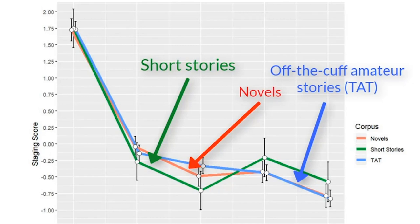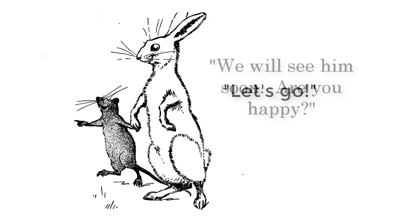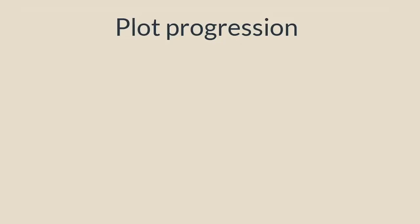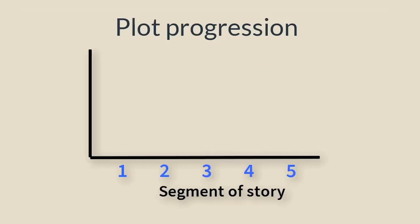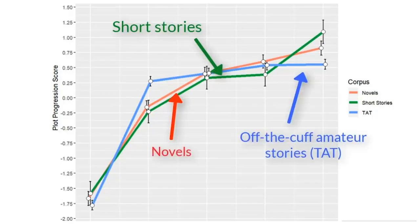Narrative structure, then, is not tied to content, length, or formality, but it is something deeper, more universal. Once the stage is set, the story can begin — words that reflect movement and change over time should increase. We use a combination of words, but two of the main players are auxiliary verbs and pronouns, which by their very nature are action-oriented and social. We assumed that over the course of the story, markers of plot progression would increase — and that's what we found across all story genres.